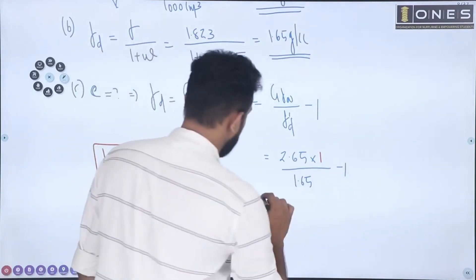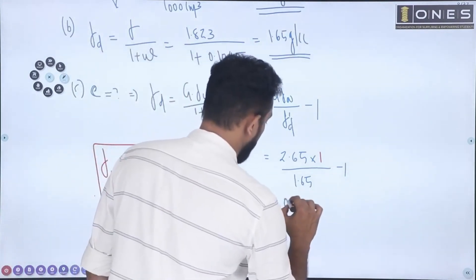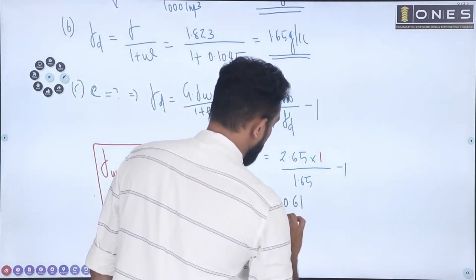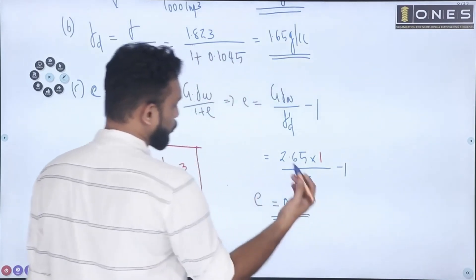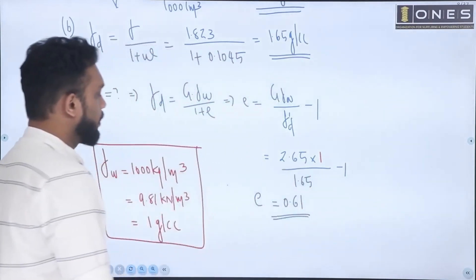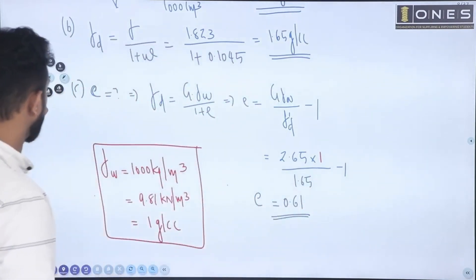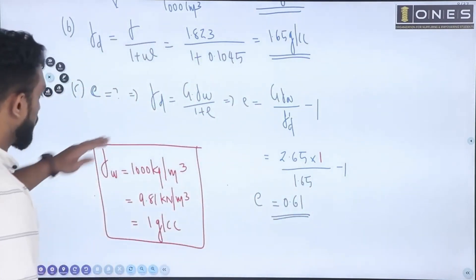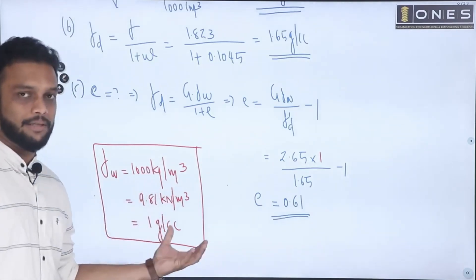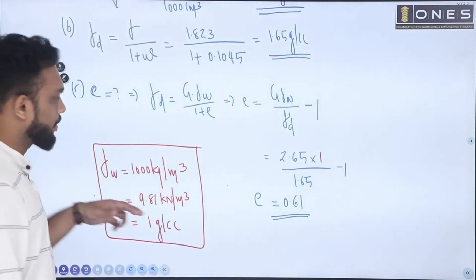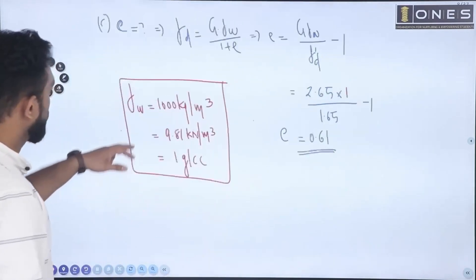Calculating this gives e equal to 0.61. If you show the work correctly, you will get the marks.